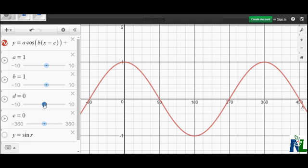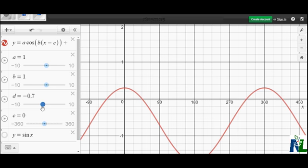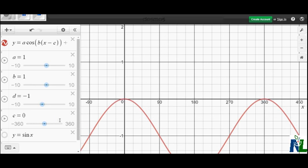For d, d is added on to the end of our function. If I vary d, we'll see that the graph will shift upwards and downwards.